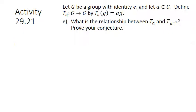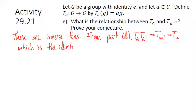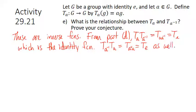Part E: what is the relationship between T_A and T_{A-inverse}? They should be inverse functions. Using Part D, T_A composed with T_{A-inverse} equals T_{A·A-inverse} equals T_E, which is the identity function (from Part C). And in the other order, T_{A-inverse} composed with T_A also equals T_{A-inverse·A} equals T_E — the identity function. So T_A and T_{A-inverse} are indeed inverse functions.